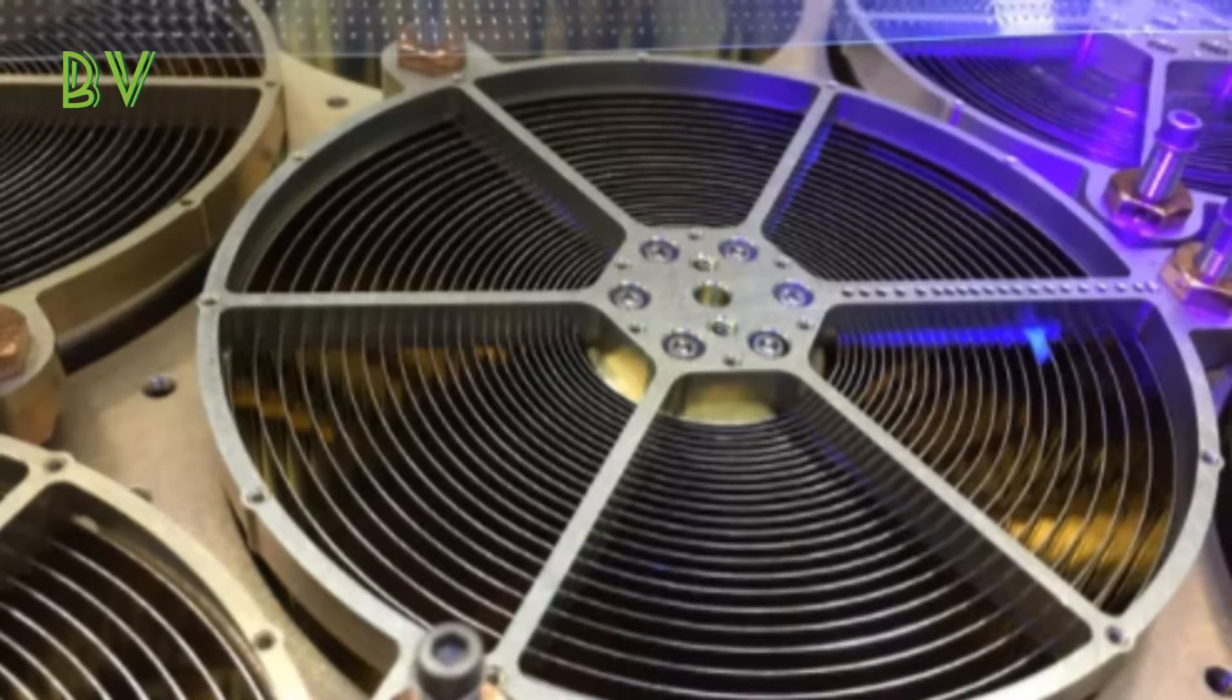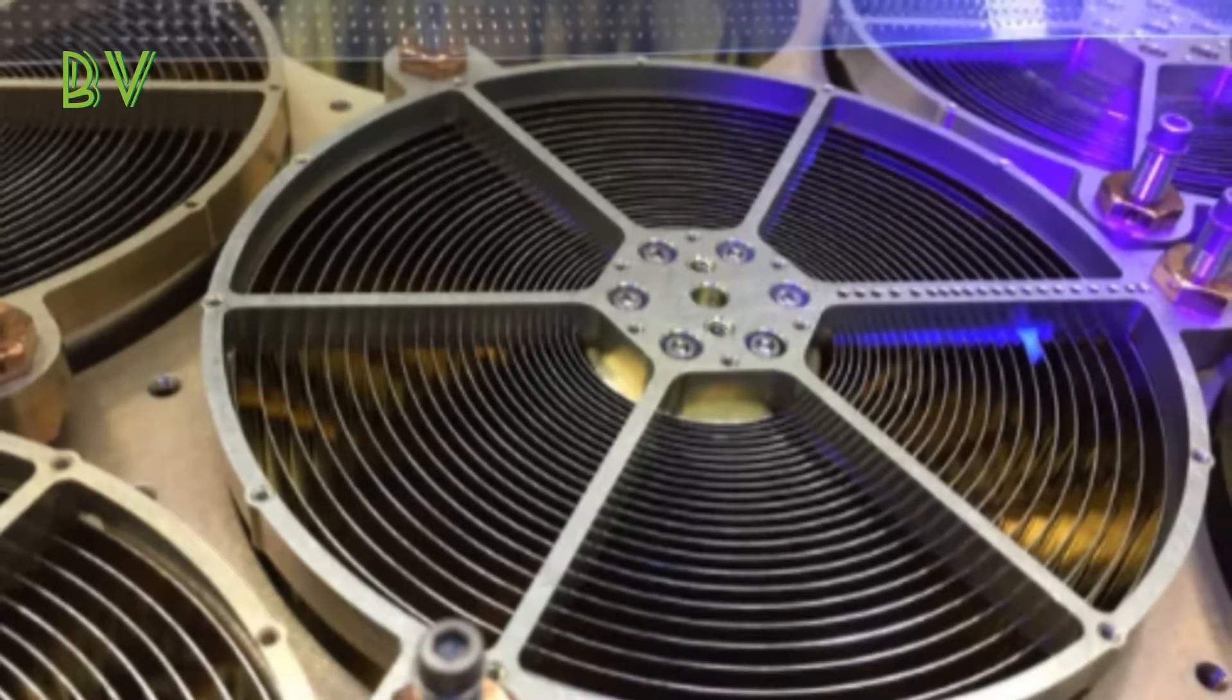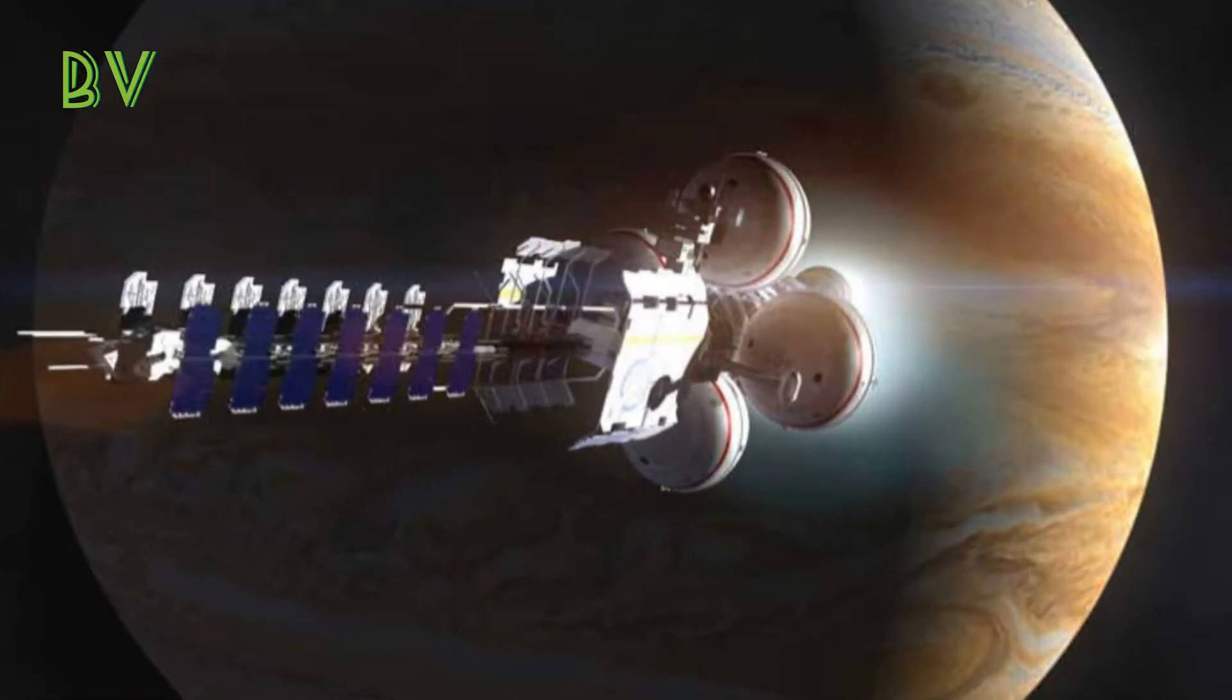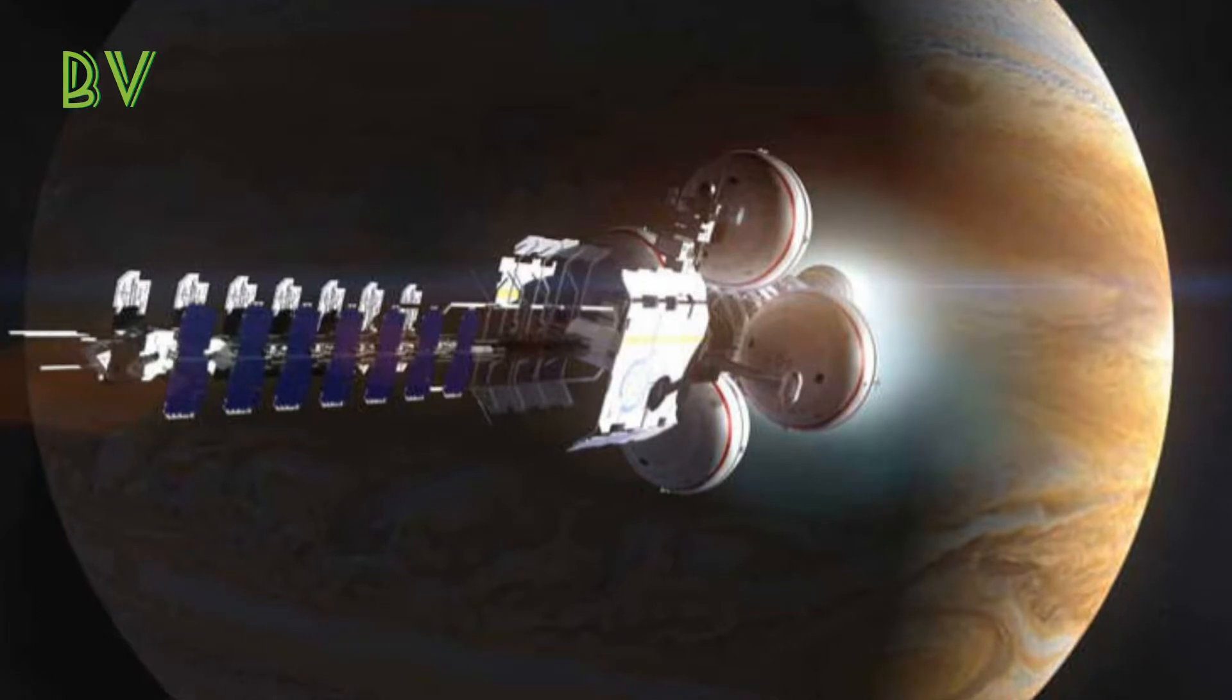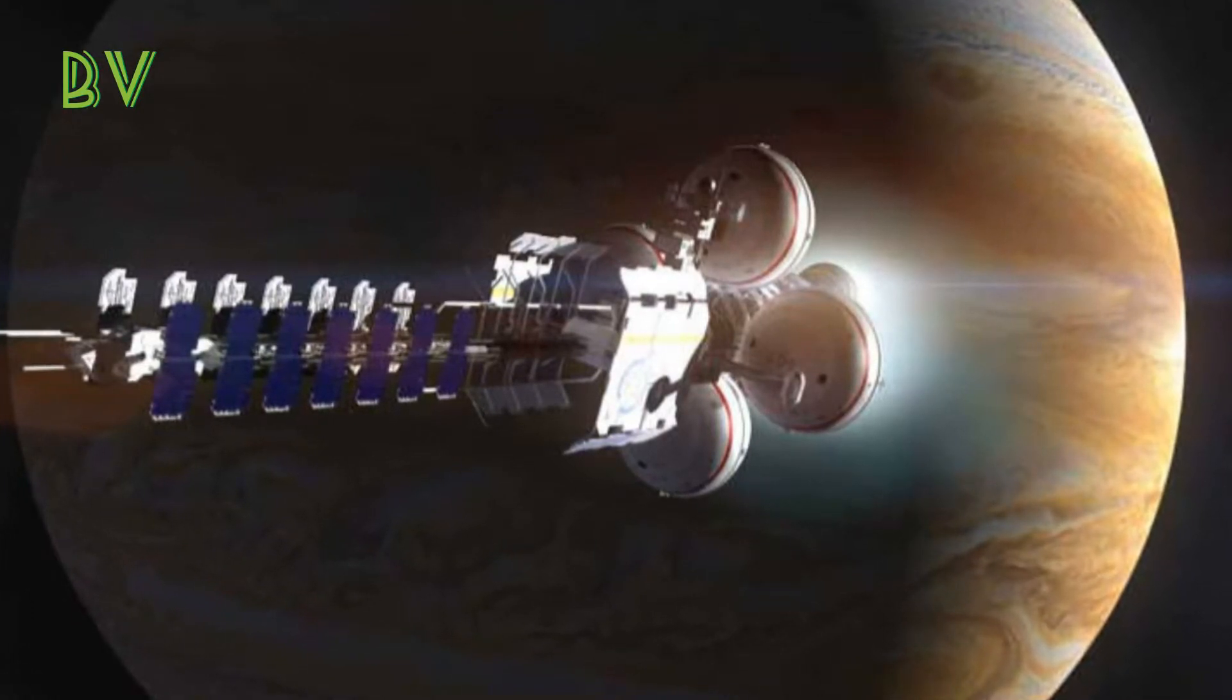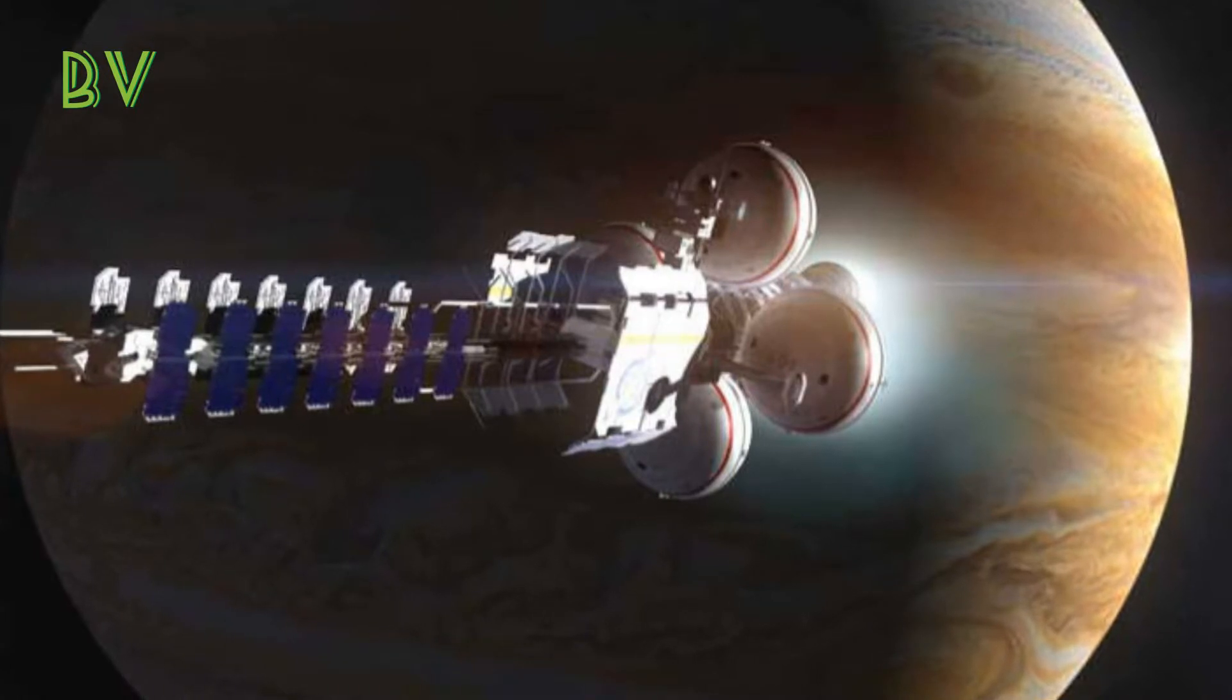Last June, NASA's neutron star interior composition explorer, NICER, instrument was installed on the outside of the space station. For the last six months, NICER's 52 X-ray telescopes have focused on studying neutron stars, including pulsars.